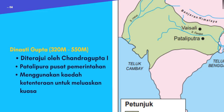Lepas Perang Kalinga ni lah dia insaf, dia rasa macam perang ni membawa banyak keburukan, dan akhirnya dia jadi sami, masuk agama Buddha. Boleh cari dan tengok film Asoka kalau nak tahu cerita pasal Asoka ni. Ok, next - Dinasti yang gunakan kaedah fizikal juga adalah Dinasti Gupta. Ini dah selepas Dinasti Maurya - 320 Masihi hingga 550 Masihi, diterajui oleh Chandra Gupta I. Pataliputra still lagi menjadi pusat pemerintahan, menggunakan kaedah ketenteraan untuk meluaskan kuasa. Tidaklah sehebat Maurya yang menguasai hampir semua.